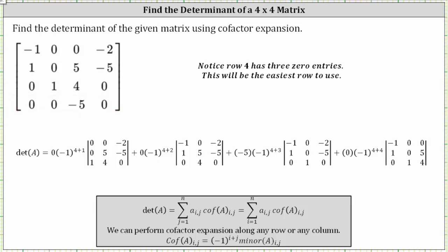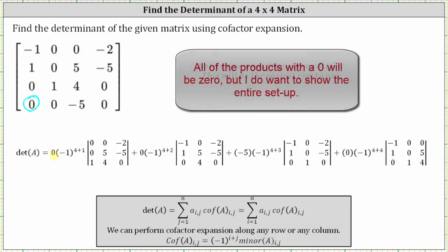We begin with the first element in row four, which is in row four, column one. So we begin with zero, and because the element is in row four, column one, we multiply by negative one raised to the power of four plus one. Next, we eliminate row four and column one from the matrix and multiply by the determinant of the remaining three by three matrix, where the first row is zero, zero, negative two; the second row is zero, five, negative five; and the third row is one, four, zero. So here we have a₄₁ times the corresponding cofactor.